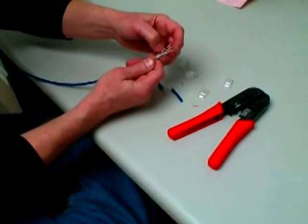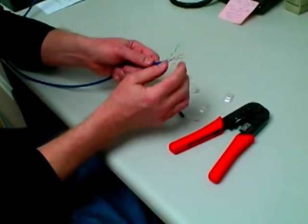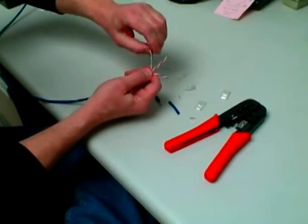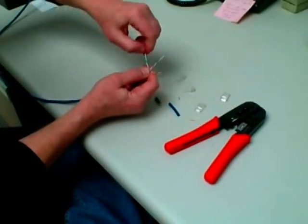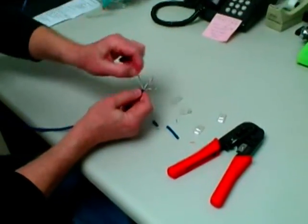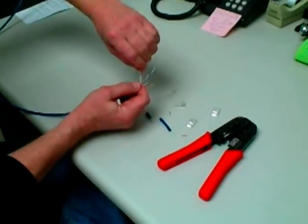I'm going to pull the two green ones that are wrapped on one side and the brown on the opposite side. We're going to untwist each pair, which is going to give us eight individual wires. The next step is lining them up.